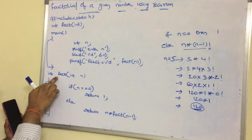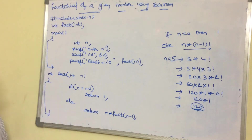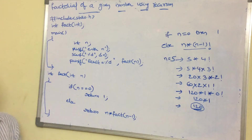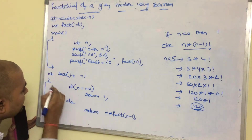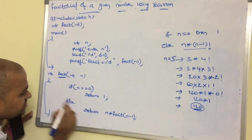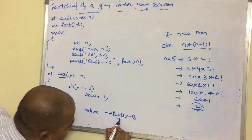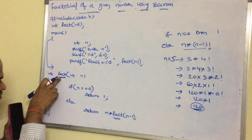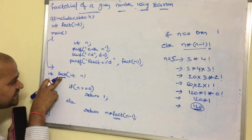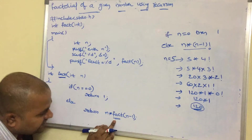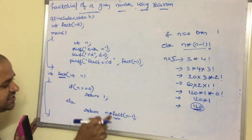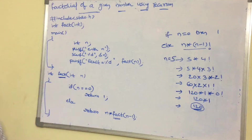This is called recursion — recursion means a function which is called by itself. In the fact function, we are calling the fact function again. So the calling function is fact and the called function is also fact. If the calling function and the called function are the same, it is known as recursion.